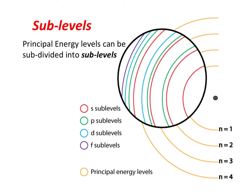This is where it starts getting a little complicated. If you look at the diagram, the orange areas are the principal energy levels — we're showing four: n1, n2, n3, and n4. The principal energy levels can be subdivided into what are called sublevels. There are S sublevels in red, P sublevels in green, D sublevels in blue, and F sublevels in purple.